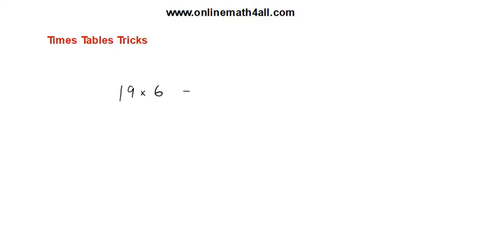19 times 6: make 6 into 60, then 6 times 9 is 54, and 60 plus 54 is 114. So the product is 114. After much practice we will be able to do this kind of calculation mentally without pen and paper. That is the first trick — multiplying a two-digit number by a single-digit number with 1 in the tens place.